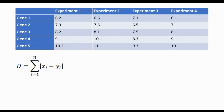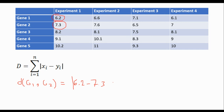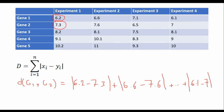Manhattan distance is pretty easy — you just get the absolute value of the difference between the two gene expression values for each experiment. For example, for G1 and G2: |6.2 − 7.3| plus |6.6 − 7.6|, and you continue until the last experiment and find the final answer. In terms of calculation, this one is the easiest.